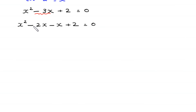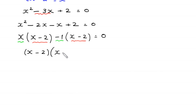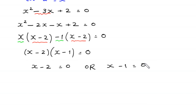We factor x² − 3x + 2 by splitting −3x as −2x − x: x(x−2) − 1(x−2) = 0, giving (x−2)(x−1) = 0. So either x − 2 = 0 or x − 1 = 0, meaning x = 2 or x = 1.